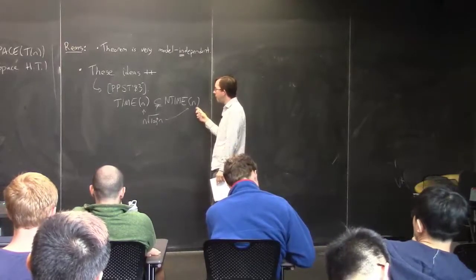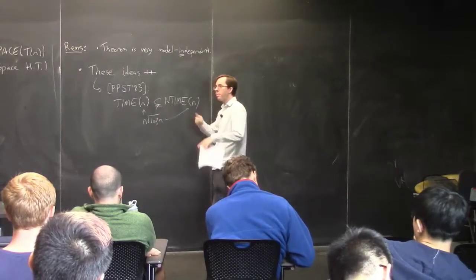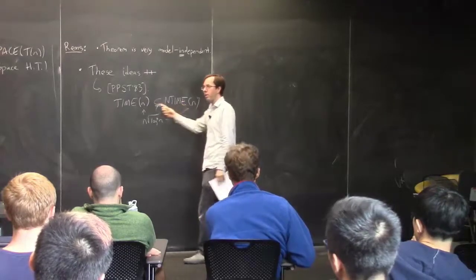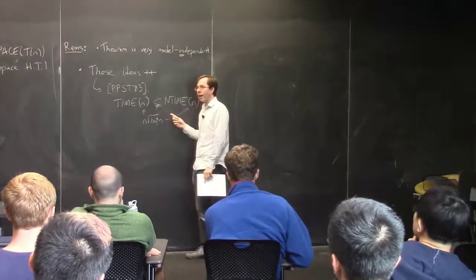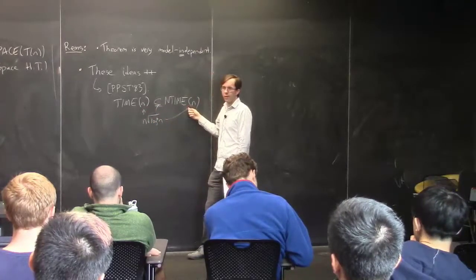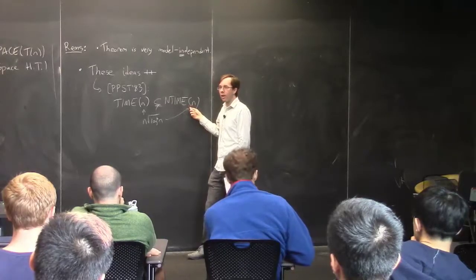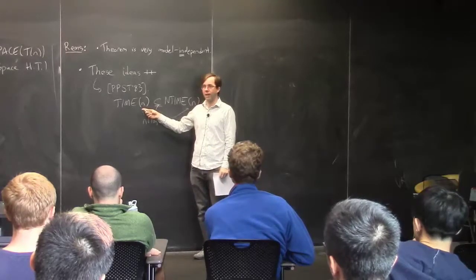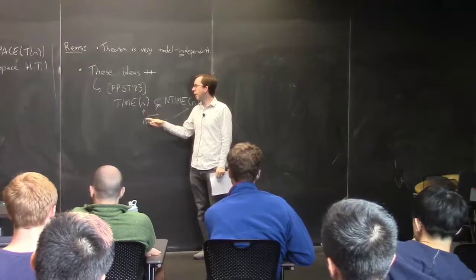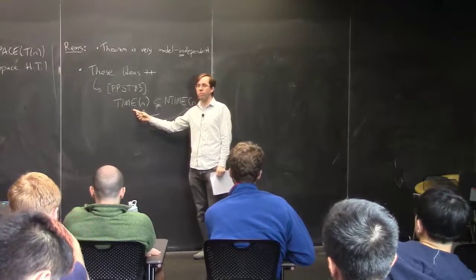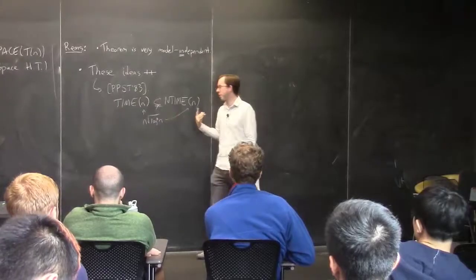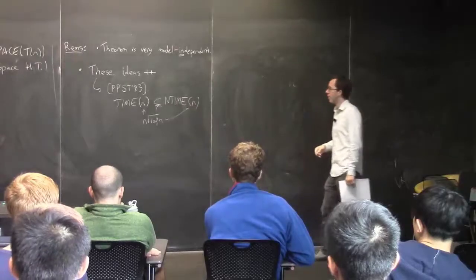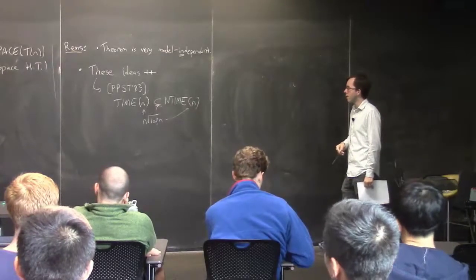In the NP versus P question, it's even stronger, because P is not just linear time or n² time — it's the union over all polynomial time. So if you want to show NP ≠ P, you have to show there's some language solvable in non-deterministic time, say n^10, which cannot be solved in deterministic time n^10, or even deterministic time n^anything. You're allowing the deterministic algorithm more resources, whereas in the PPST result they get the exact same amount of resources — linear time. So it's still pretty cool.